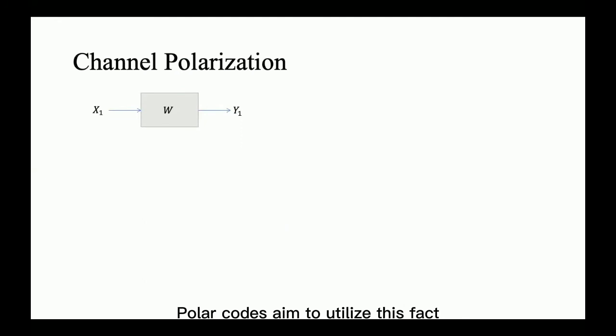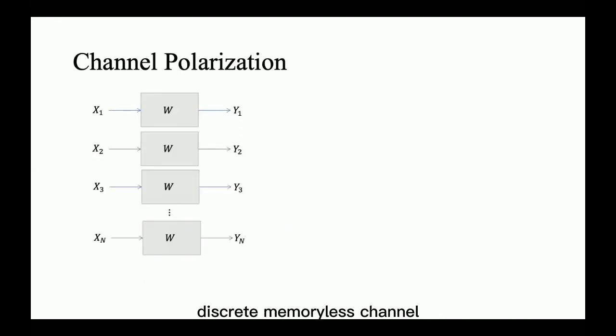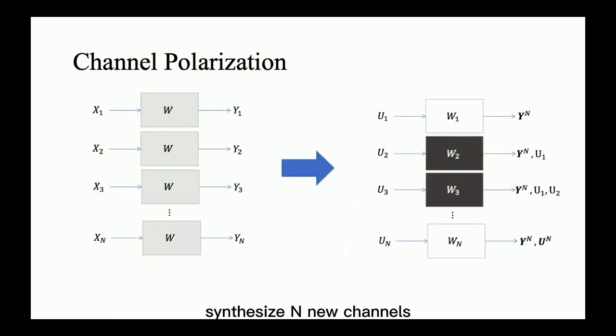Polar codes aim to utilize this fact. So, we start with a binary discrete memoryless channel, and for N independent uses of this channel, the channel polarization theorem says that we can synthesize N new channels that are polarized,